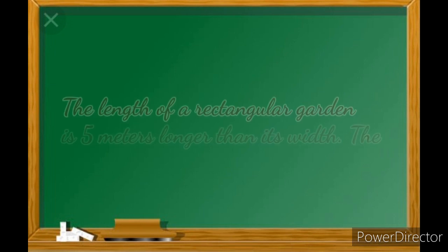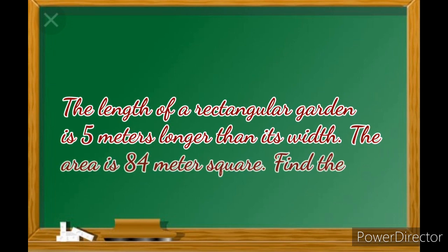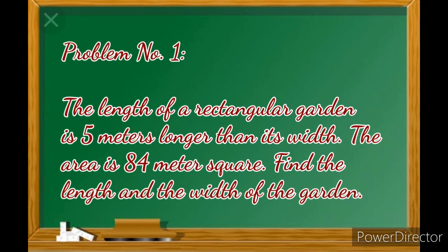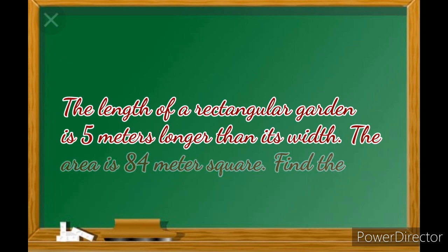Problem number 1. The length of a rectangular garden is 5 meters longer than its width. The area is 84 square meters. Find the length and the width of the garden.